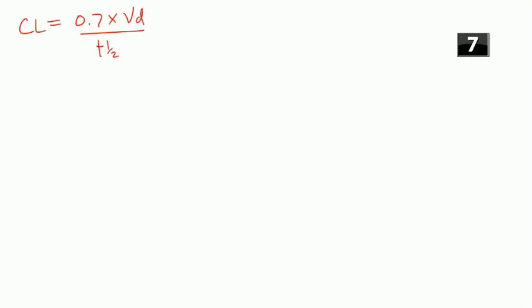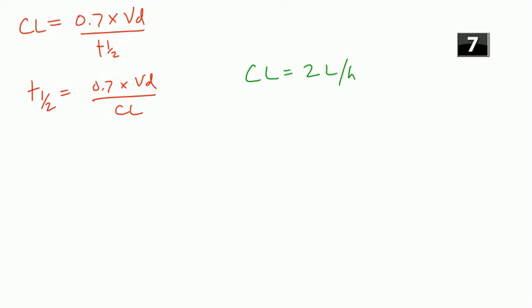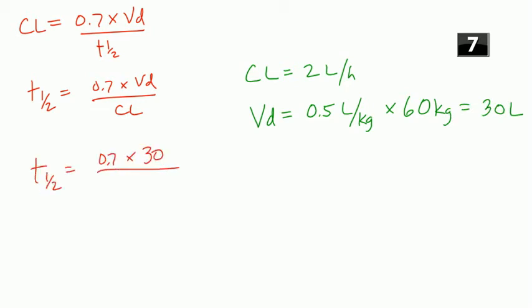Question 1: what's the half-life of drug X in this patient? Start with the clearance equation: clearance equals 0.7 times Vd divided by half-life. Rearranging: half-life equals 0.7 times Vd divided by clearance. Clearance is given as 2 liters per hour. Volume of distribution is 0.5 liters per kilogram — but liters per kilogram is not a unit of volume, so you must account for the patient's weight. For this 60-kilogram patient, Vd equals 0.5 times 60, which is 30 liters. So half-life equals 0.7 times 30 divided by 2, which gives 10.5 hours.